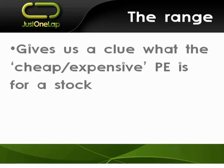So that range gives us a clue as to what the cheap and expensive PE is for a stock. In banks, it's typically between 8 and 11 — so 8 is cheap and 11 is expensive. On the market as a whole, 12 is typically the average, so your 10s are cheap and your 14 to 16s are expensive. It gives us that nice range.